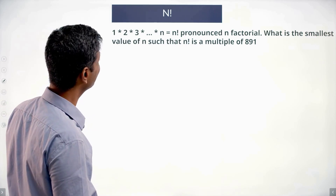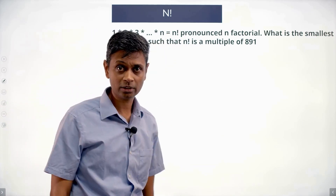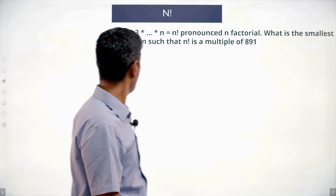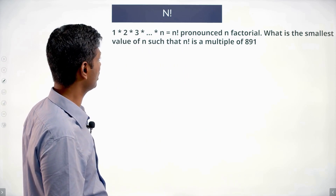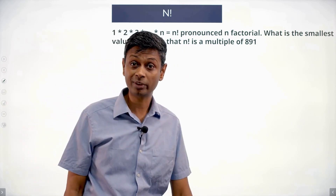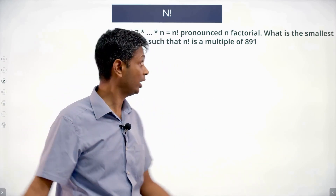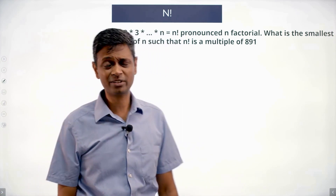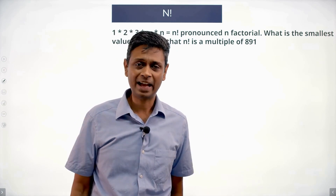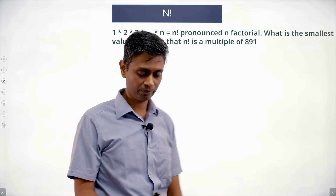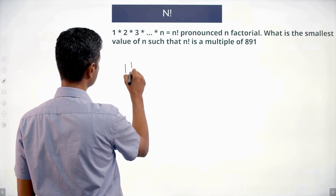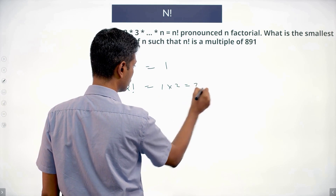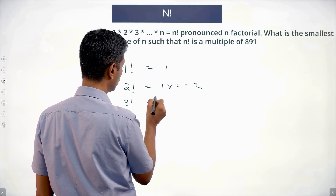1 into 2 into 3 into 4 into 5 till n — n with an exclamation mark — it's called n factorial. What is the smallest value of n such that n factorial is a multiple of 891? 891 is such a large number and I'm already worried. For these kinds of questions, I love breaking it down by writing down a few numbers: 1 factorial is 1, 2 factorial is 1 into 2.